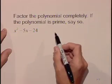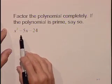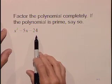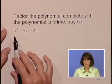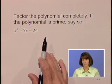Let's factor the polynomial completely. If the polynomial's prime, say so. Here we have a trinomial, x squared minus 5x minus 24. It fits that nice trinomial format. There's no greatest common factor to pull out.